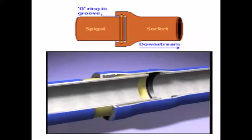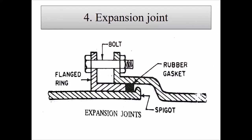The expansion joint is recommended for places where elongation or shortening of the pipe may occur due to changes in atmospheric temperature. The bell end projects vertically to some extent for coupling with a flange ring by nuts and bolts. The flange ring and rubber gasket are placed on the spigot end, which is then inserted into the bell end. The rubber gasket is pressed tightly in the annular space by means of nuts and bolts to make the joint watertight.